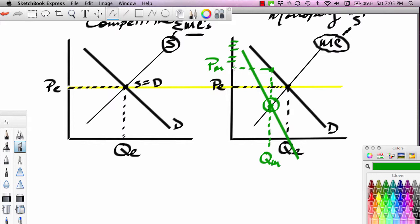But notice that in doing that, in maximizing profit, the monopolist actually produces at a higher than competitive price and produces at a lower than competitive quantity.